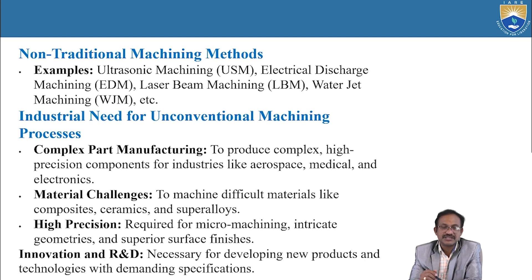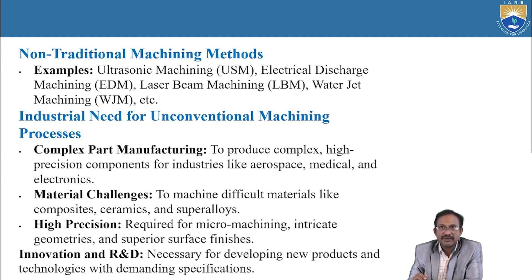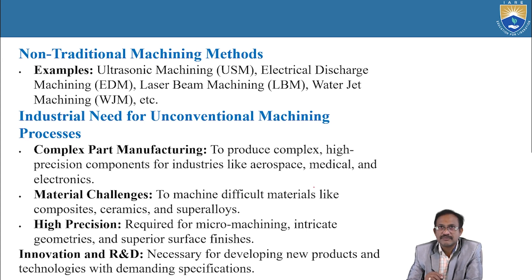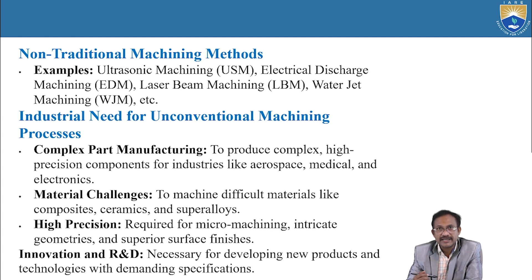Industrial need for unconventional machining processes. Complex part manufacturing: to produce complex high-precision components for industries like aerospace, medical, and electronics. Material challenges: to machine difficult materials like composites, ceramics, and super alloys. High precision: required for micromachining, intricate geometries, and superior surface finishes. Innovation and R&D: necessary for developing new products and technologies with demanding specifications.